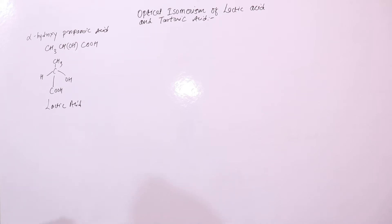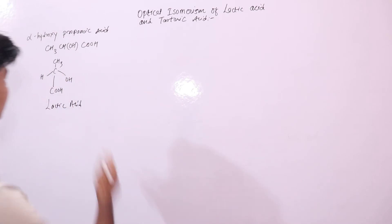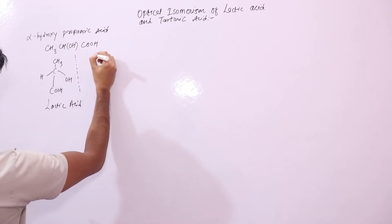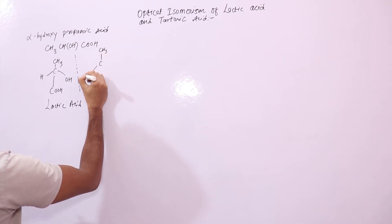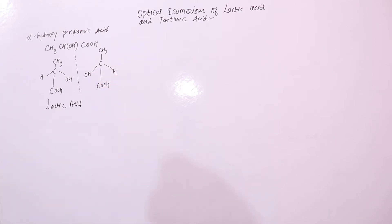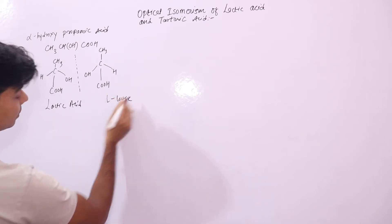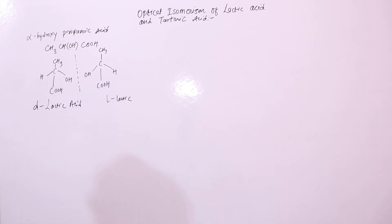Lactic acid is optically active, which means it has a D form and an L form. If you look at the mirror image of this form, it will look like this. This form is your L-lactic acid, meaning levorotatory, and this one is your D-lactic acid, dextrorotatory.